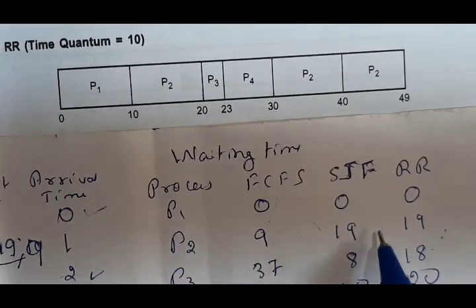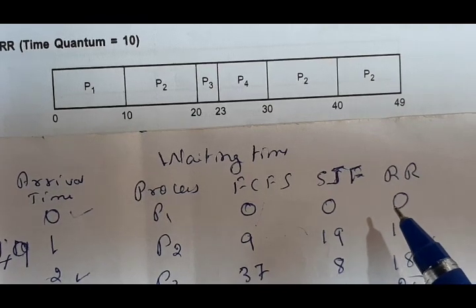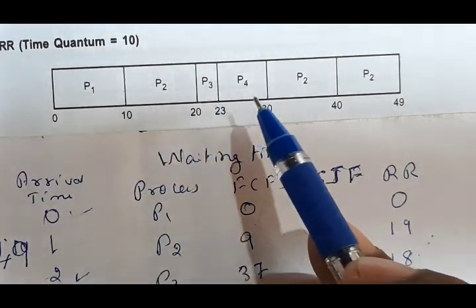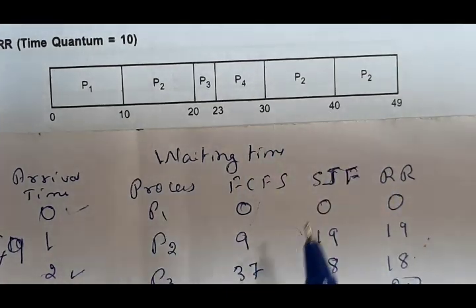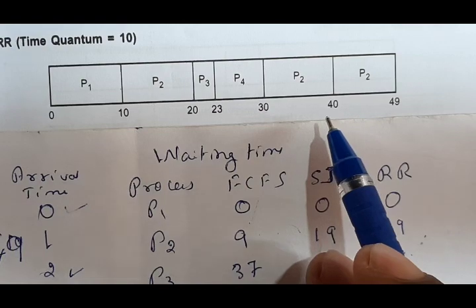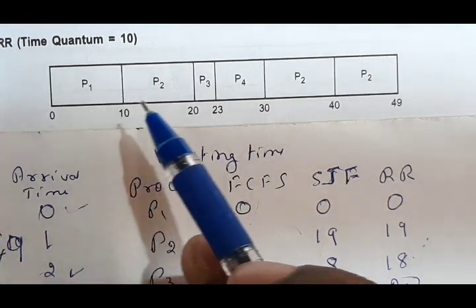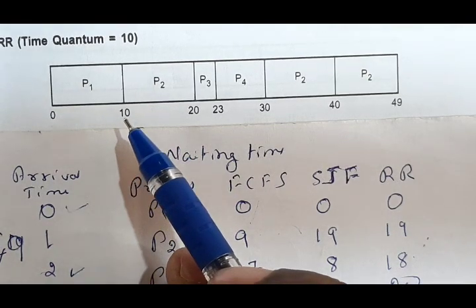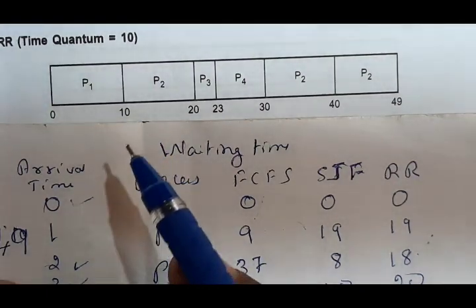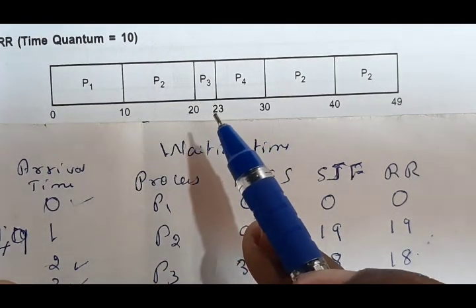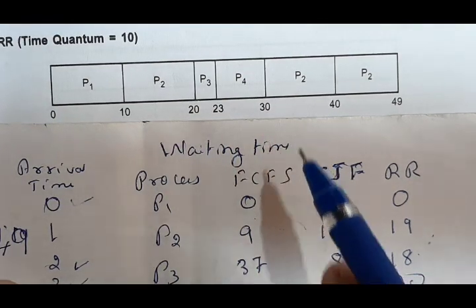For Round Robin waiting time: P1 arrived at time 0, starts at time 0, so waiting time is 0. For P2 — it first waits from time 1 to 10, which is 10 minus 1 equals 9... then it waits while P3 executes 3 milliseconds and P4 executes 7 milliseconds. So 9 plus 3 plus 7 equals 19. Wait — let me recalculate. P2 arrived at time 1; it waits from 1 to 10, so 9 milliseconds, then after executing 10 to 20, it waits while P3 (3ms) and P4 (7ms) run: 9 plus 3 plus 7 equals 19.